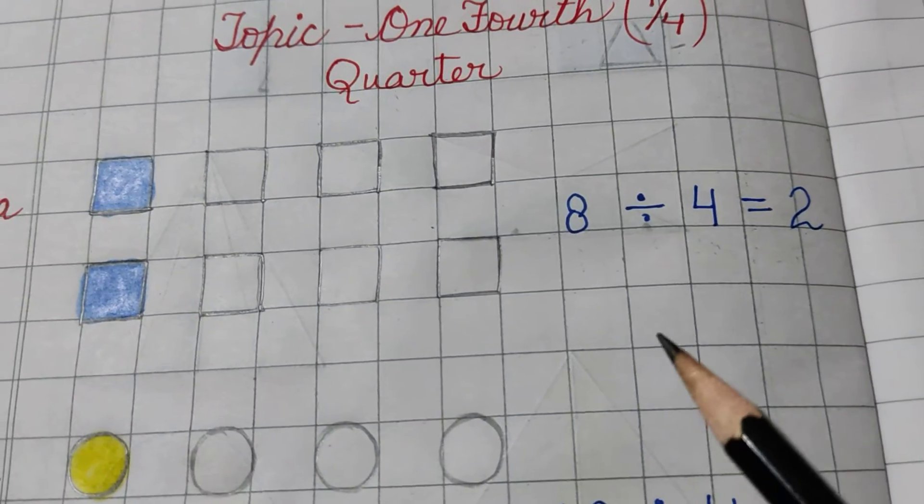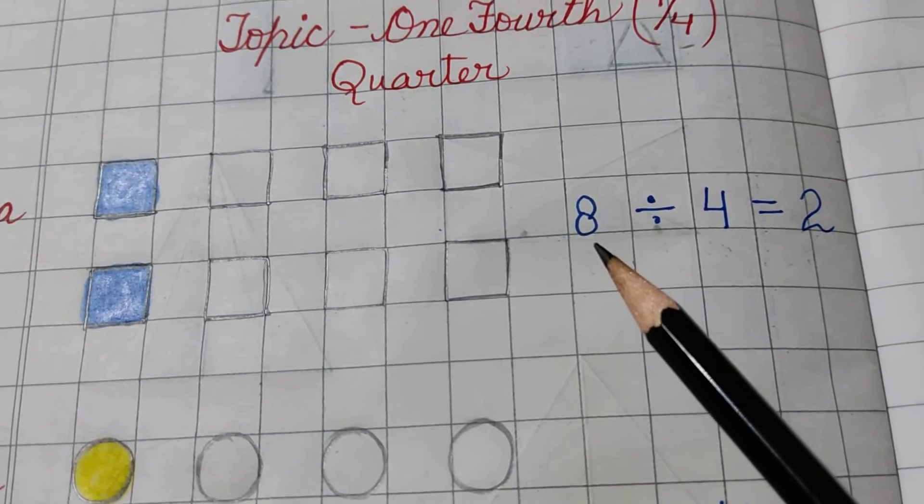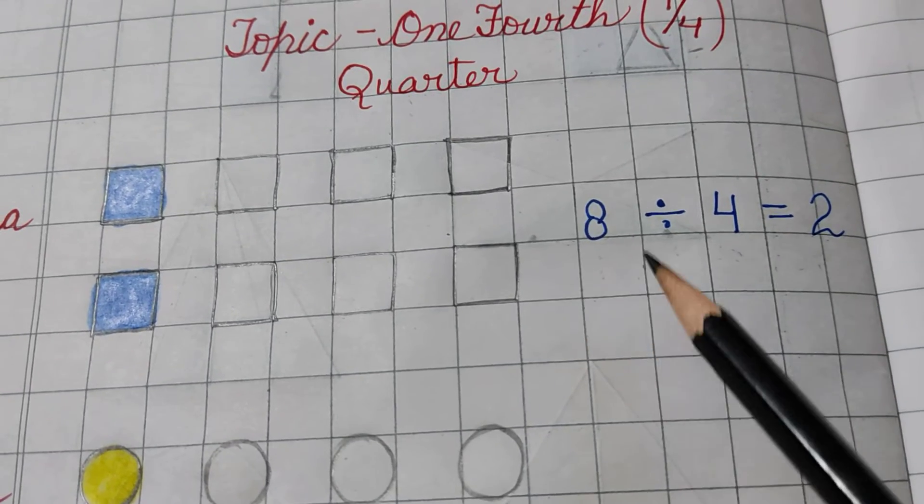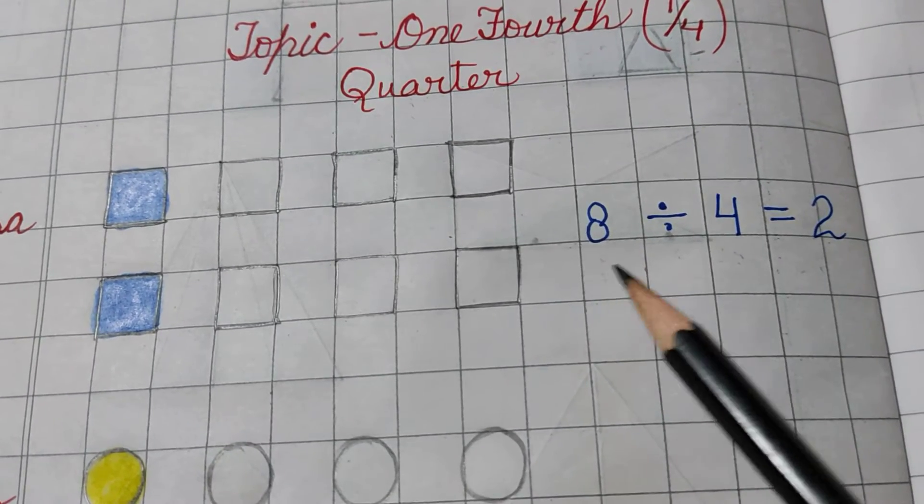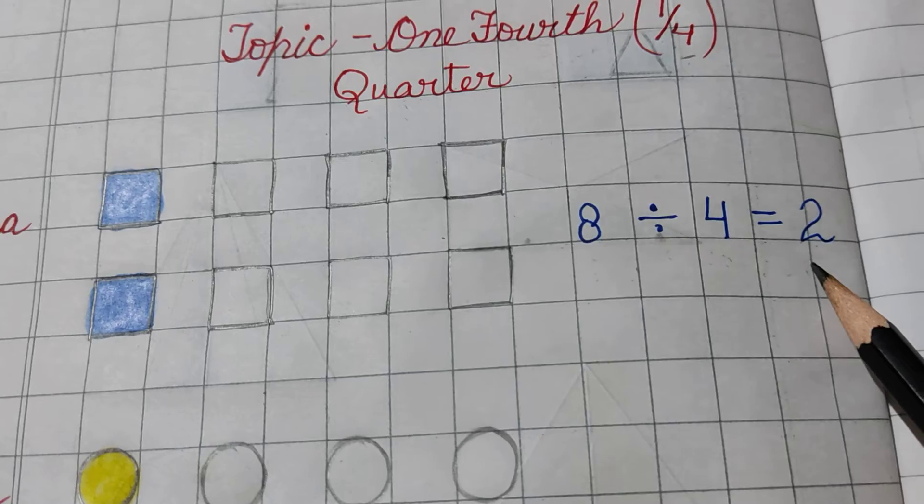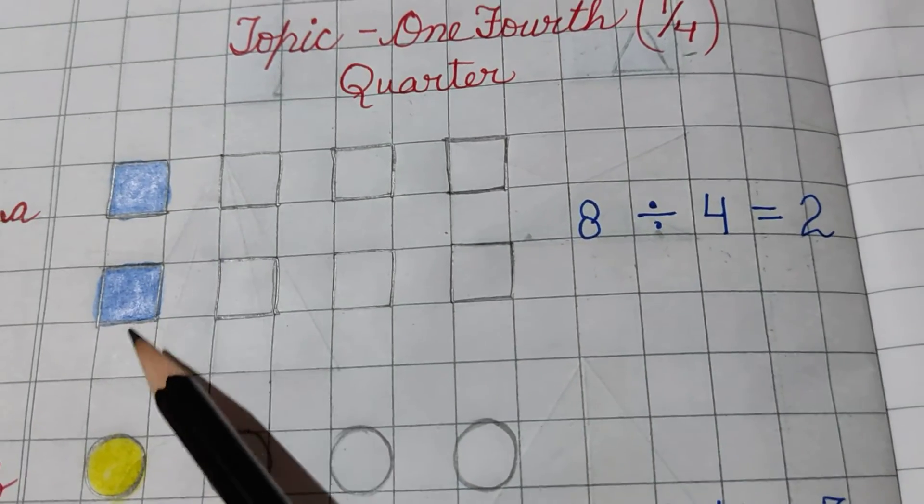That means, one-fourth of 8 is 2. 8 ka one-fourth agar nikala jaye, to uska answer aata hai 2. So, we have to color 2 squares.